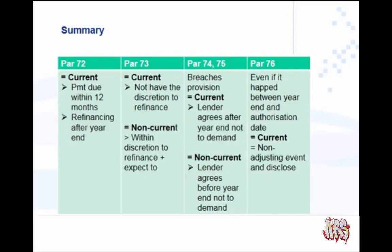Paragraph 73 required us to look at whether the entity had the discretion to refinance. If they did not have the discretion, it was classified as a current liability. If the entity did have the discretion to refinance for longer than 12 months and they expect to, we classified it as non-current.